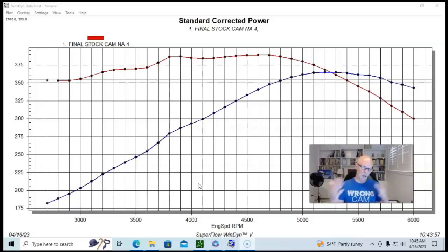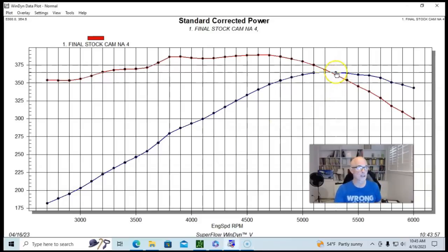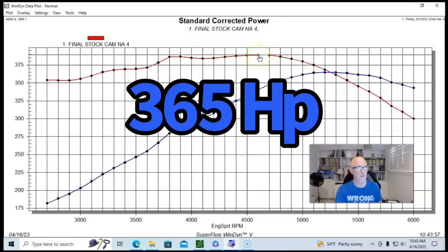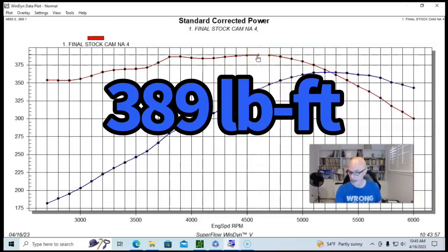That's exactly what we did. So running in otherwise stock trim with a stock camshaft and the stock intake manifold, our L33 produced 364 horsepower and 365 horsepower. We rounded up 389 foot-pounds of torque.